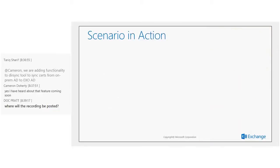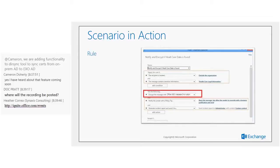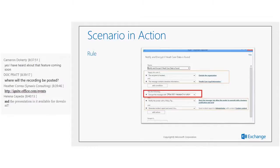Let's look at the different stages. As an admin, the first step is to create a rule depicting the scenario. Setting up the rule is simple using the out-of-box DLP capabilities to detect sensitive information — in this case, healthcare legal information — with a second condition that the recipient is located outside the organization.